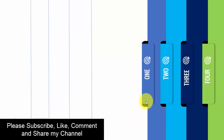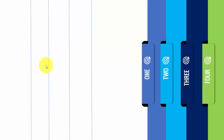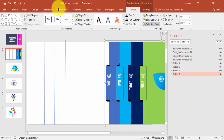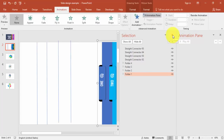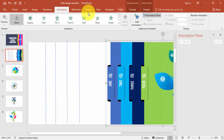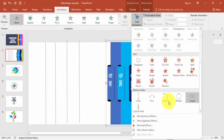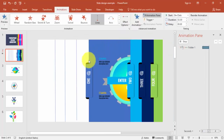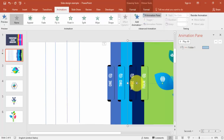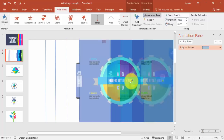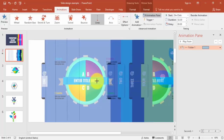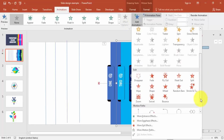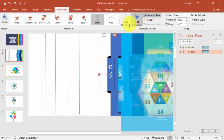For the animation, when I click folder one it should move and stop at the first line, folder two at the second line, and so on. Go to Animation, enable the Animation Pane. Select folder one, go to Add Animation, scroll down and select the motion path Line. Set the effect direction to Left, then drag the arrow endpoint so the folder stops at line one. Do the same for folder two — add animation, motion path Lines, effect Left, and drag the endpoint to stop at line two.